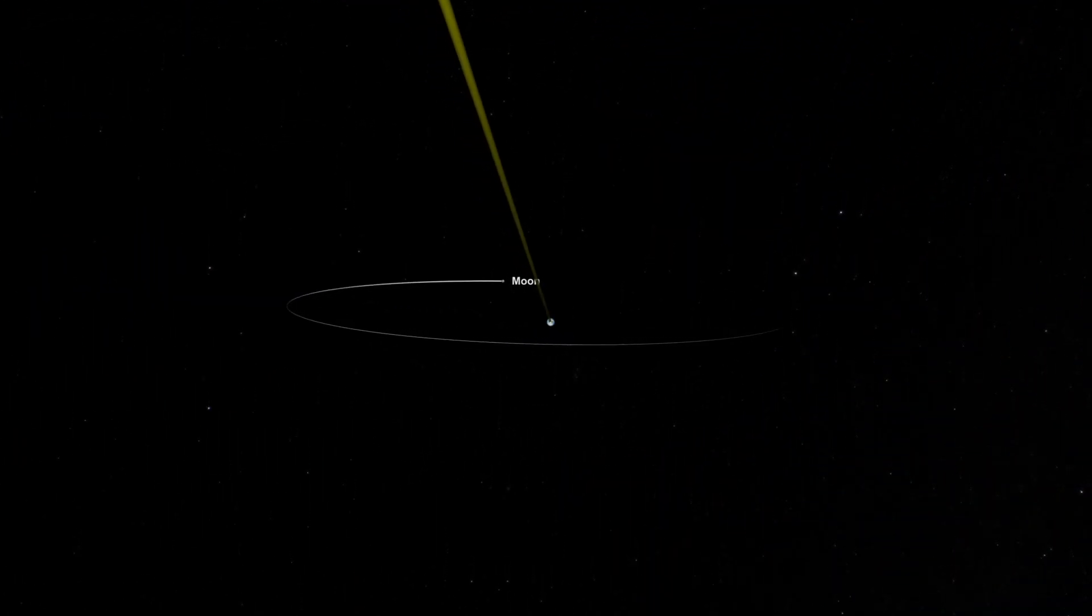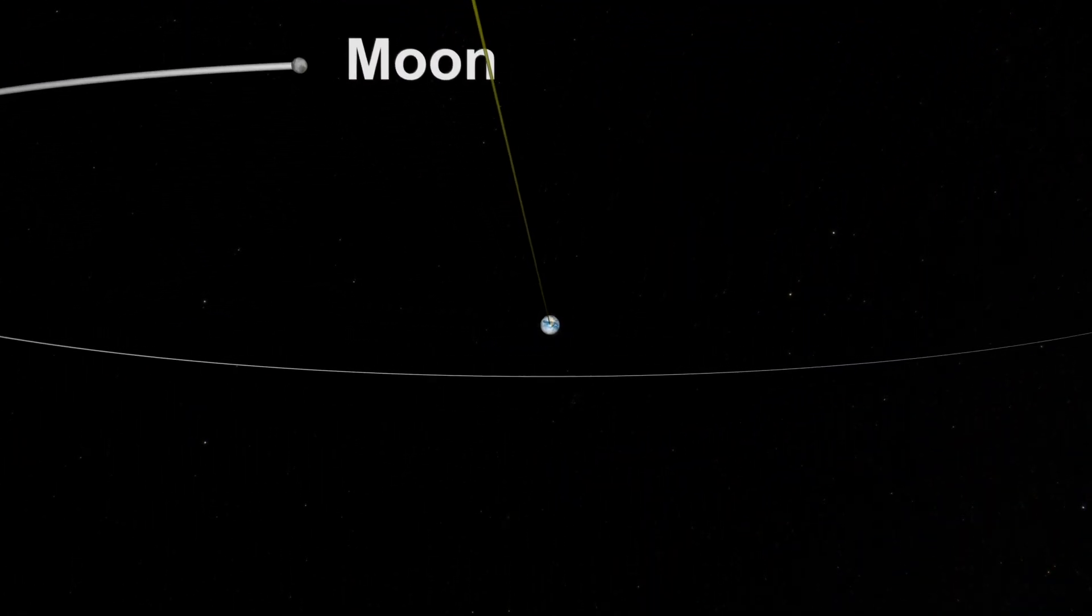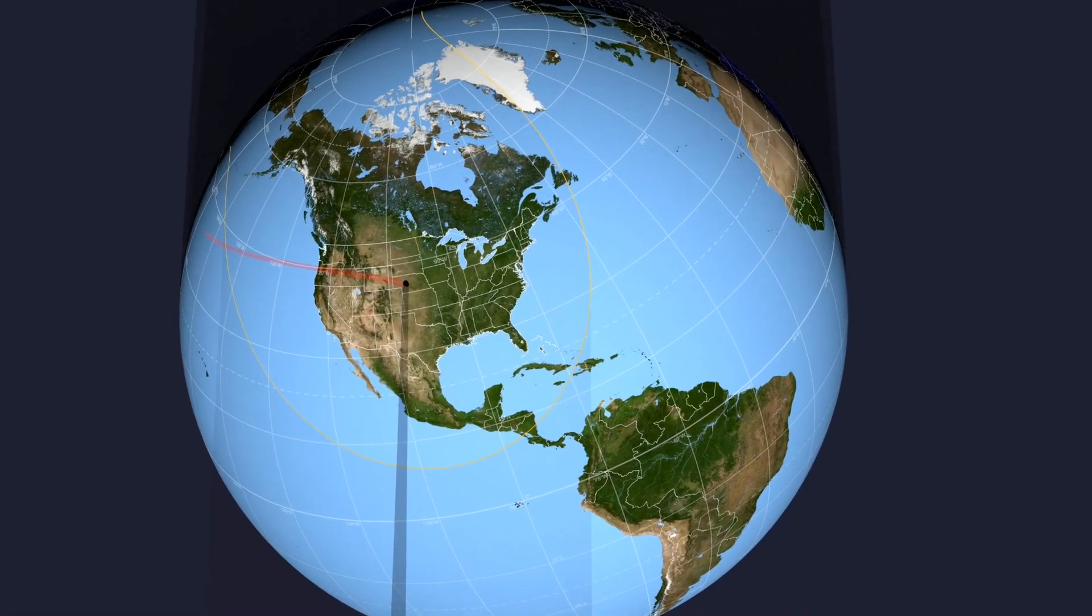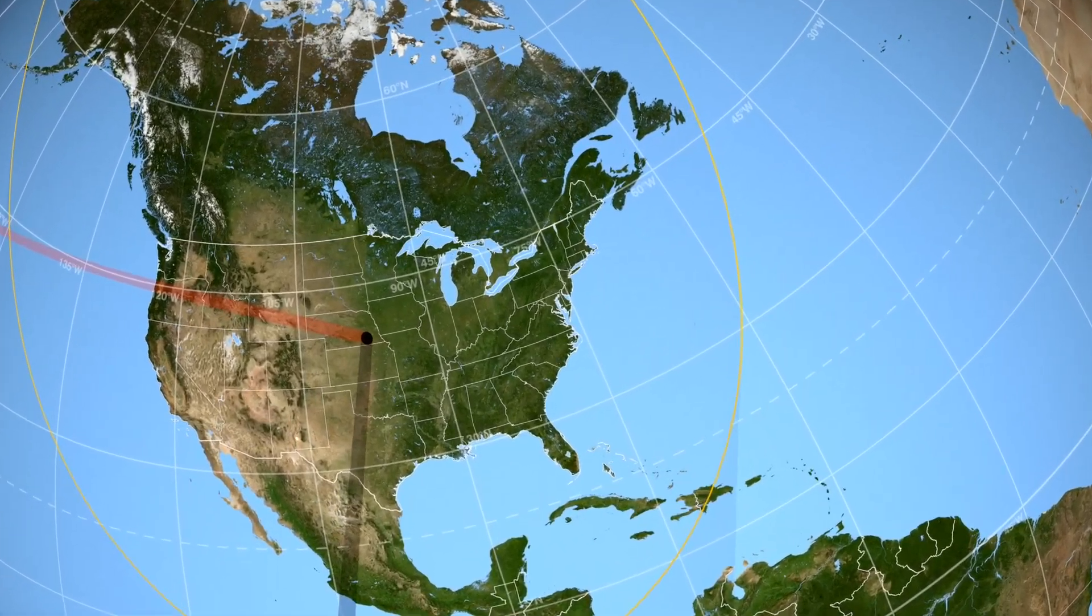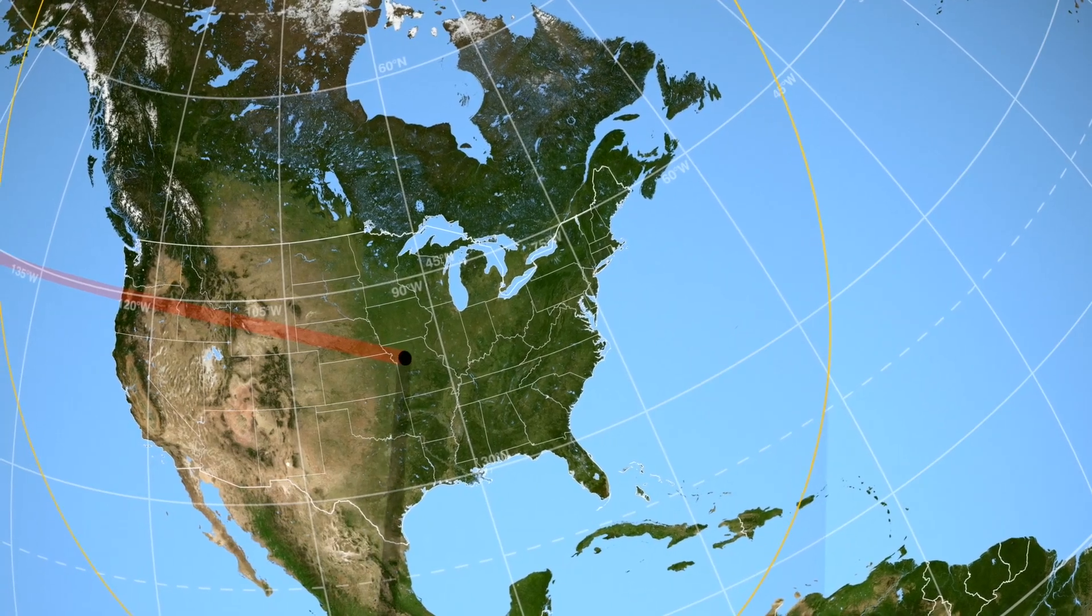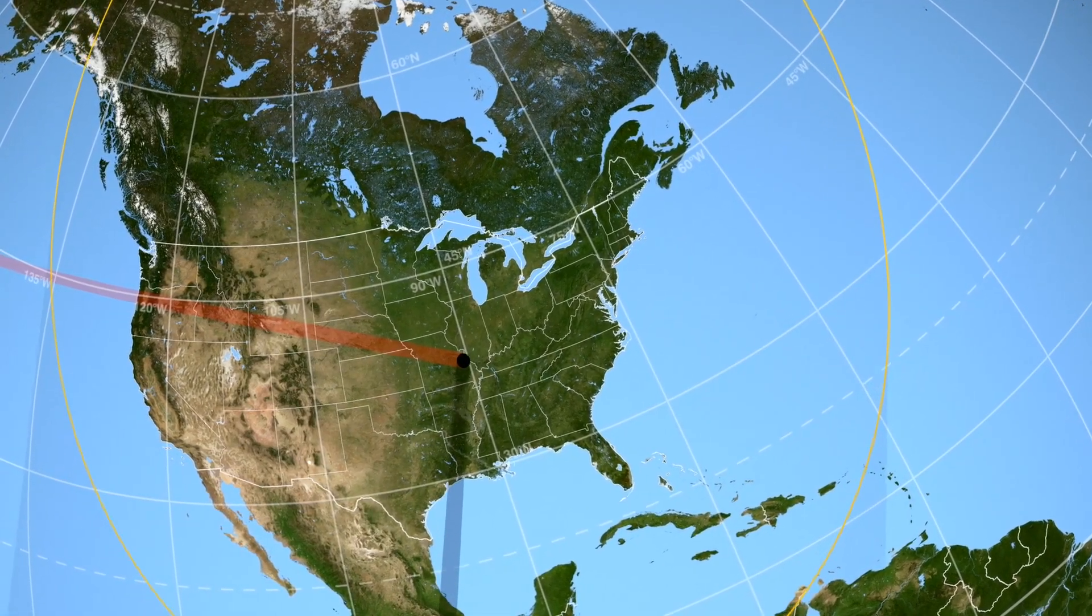Looking back at Earth from a million miles away, the Deep Space Climate Observatory will watch the August total solar eclipse in real time, giving scientists a unique opportunity to study our solar-powered planet.